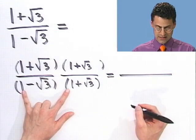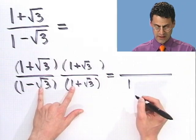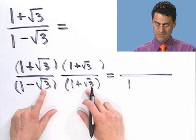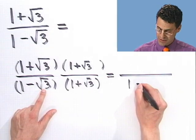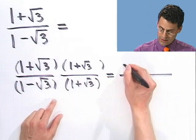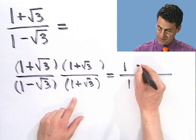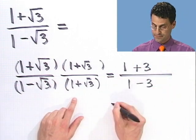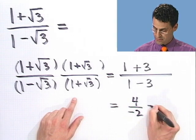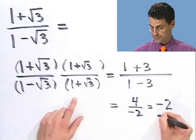Okay, multiply out the bottom, what do I see? I see a 1, and then the inside term and the outside term cancel. I'm left with minus square root of 3 times the square root of 3, which is just minus 3. And what do I get on the top? Well, the same thing. I get a 1, terms cancel, and the last term is plus 3. So this looks like 4 over negative 2, which equals negative 2. There you go.